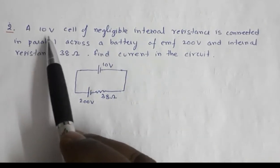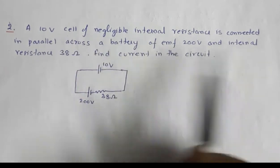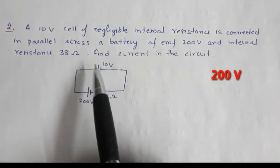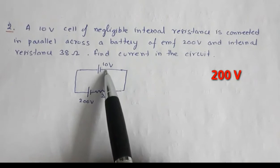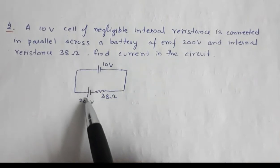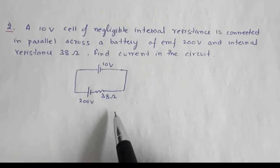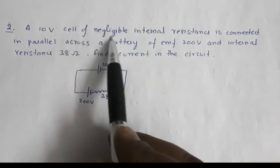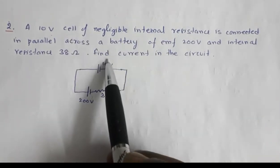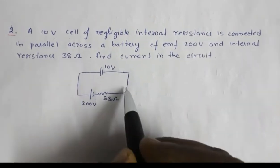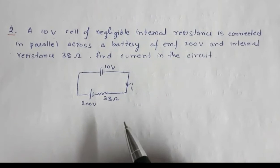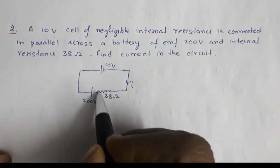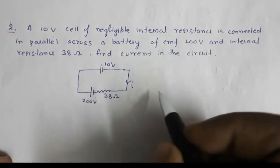In 2018, another question: a 10 volt cell of negligible internal resistance is connected in parallel across a battery of EMF 12 volt and internal resistance 38 ohm. Find the current in the circuit. This is a 10 volt battery and this is a 12 volt battery with internal resistance 38 ohm. The internal resistance of the 10 volt cell is negligible. Suppose I is the current in the circuit and we apply Kirchhoff's loop rule.